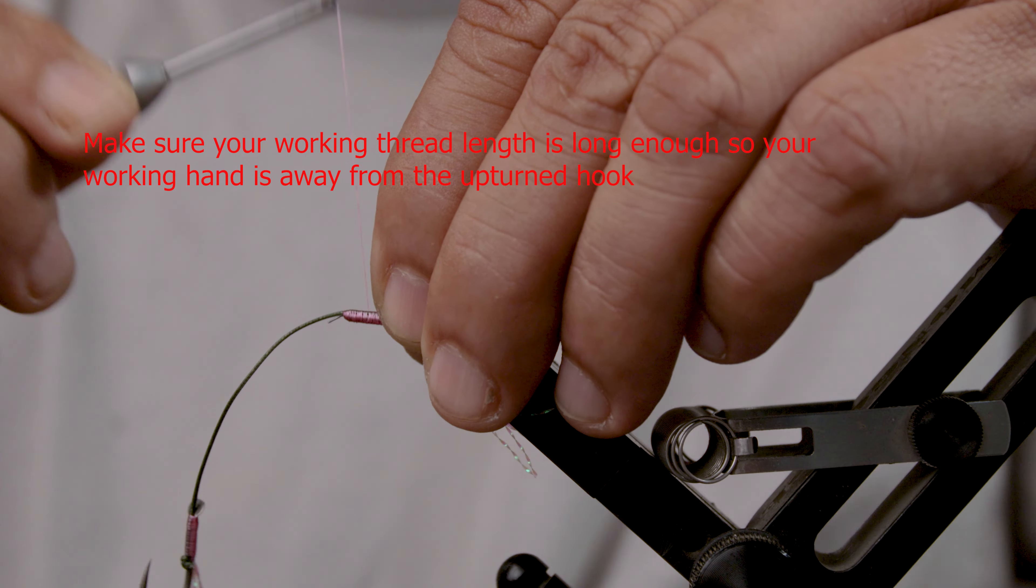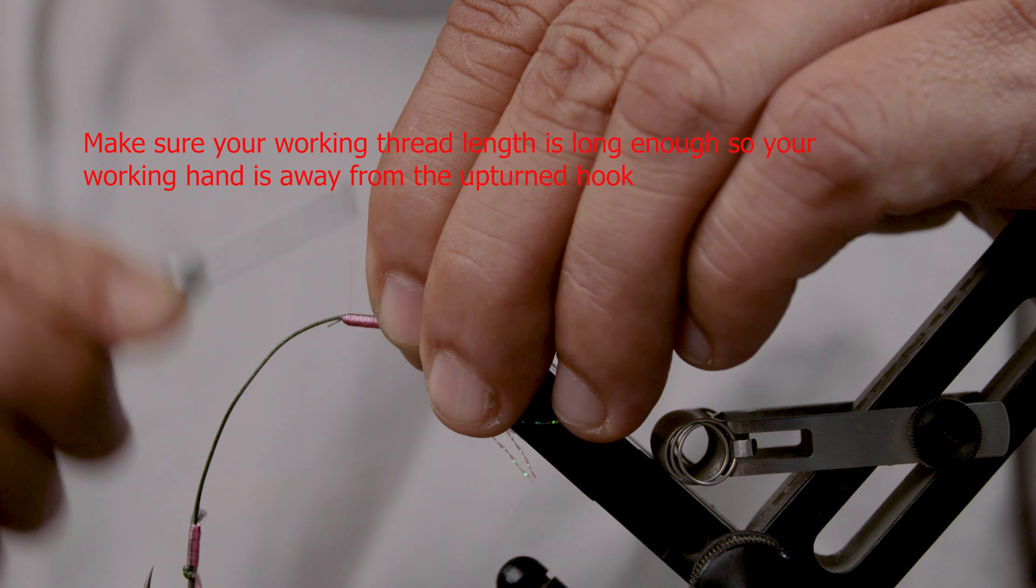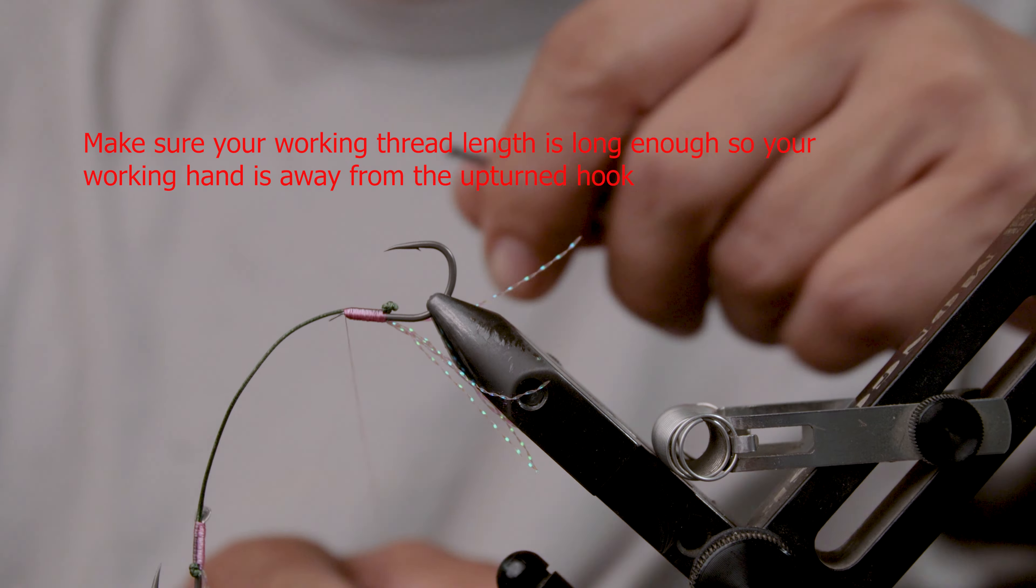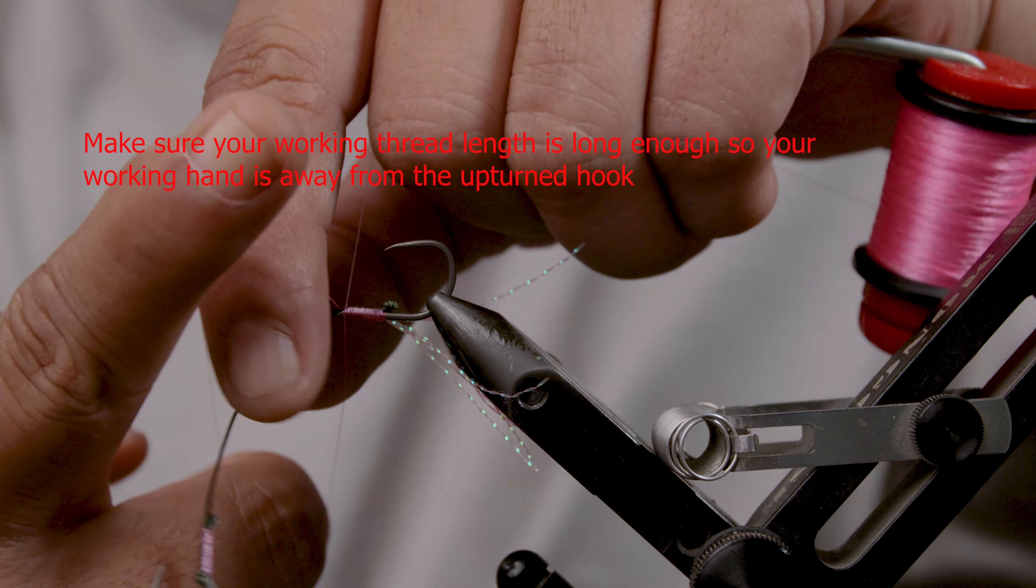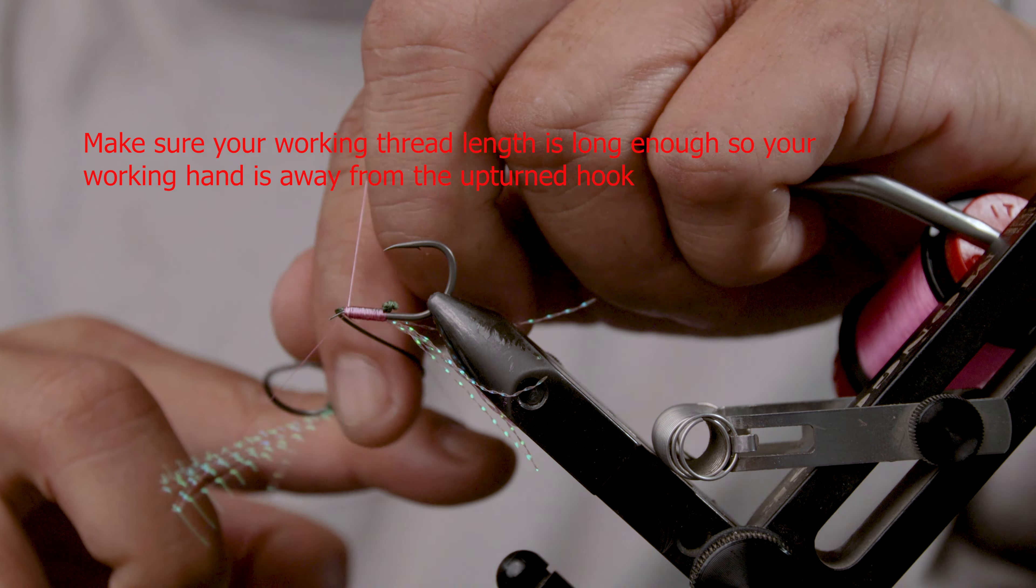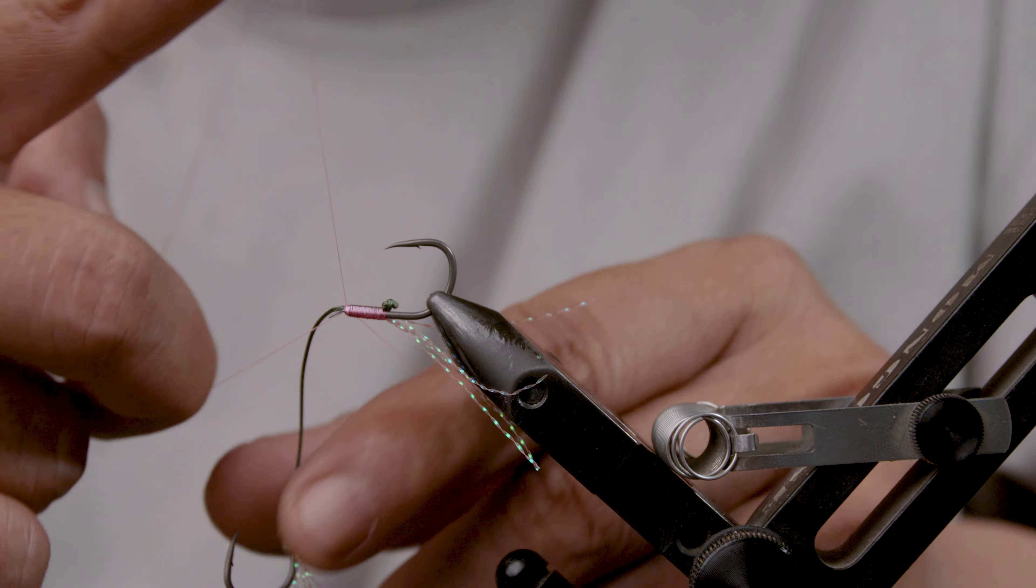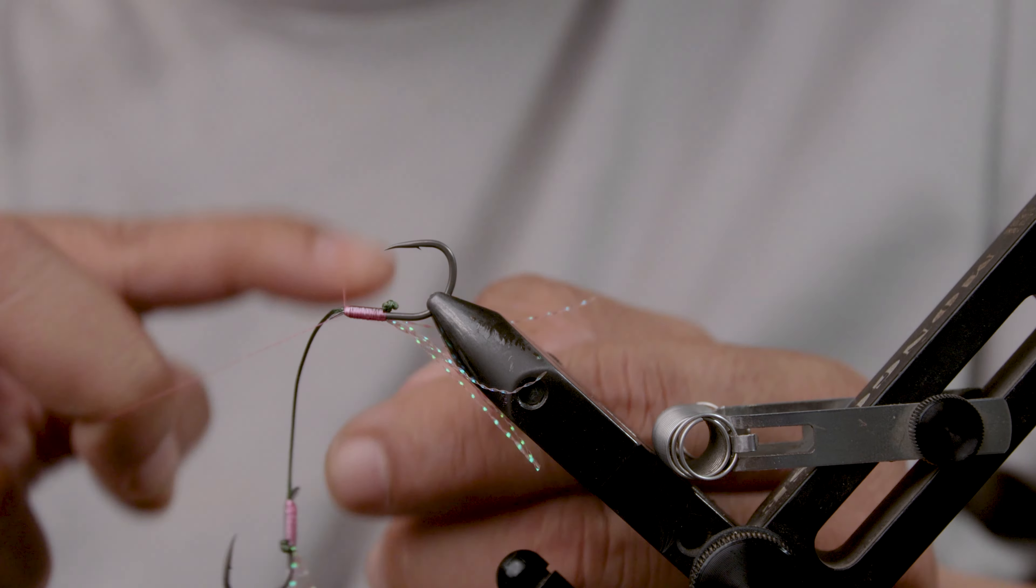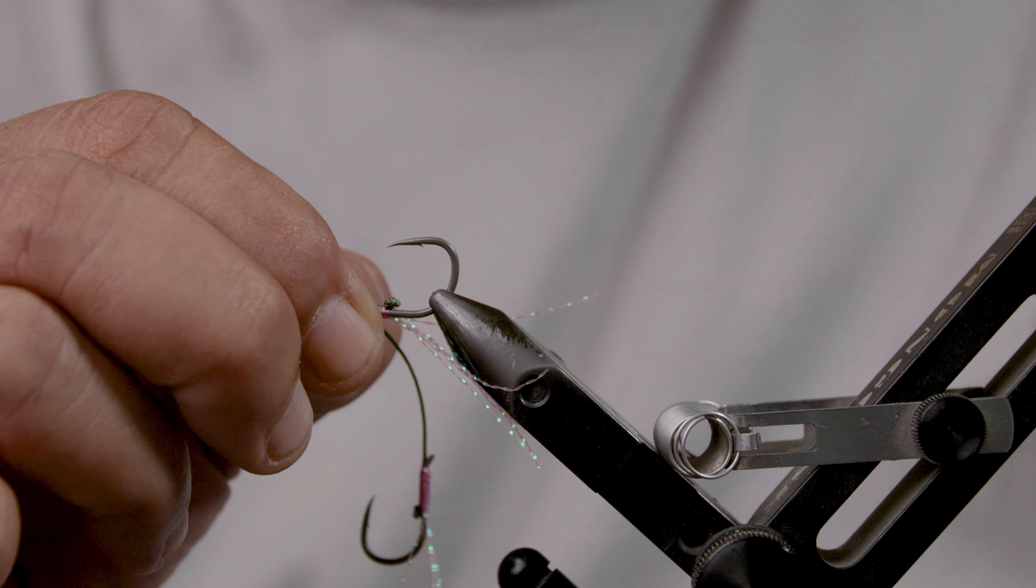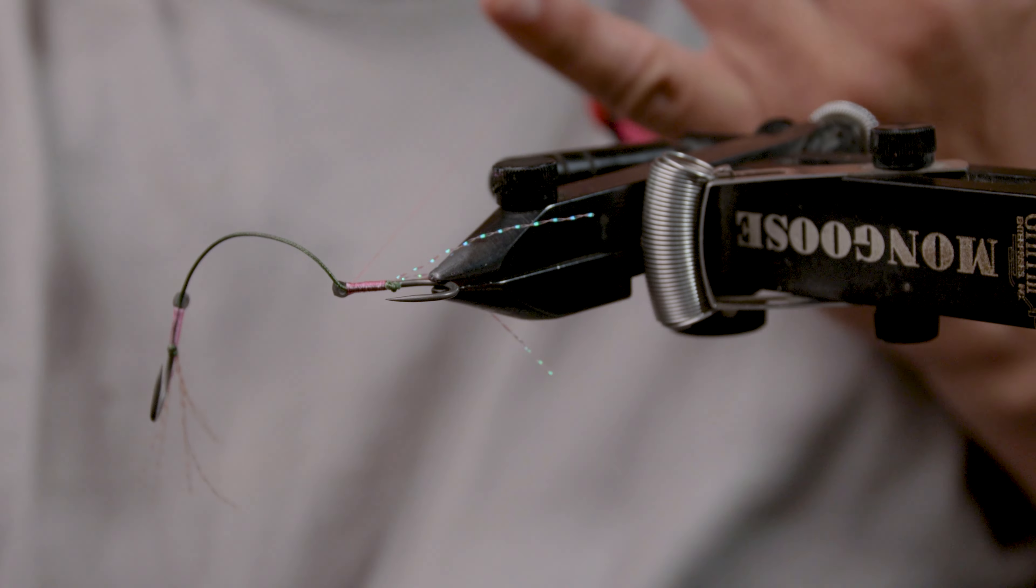So make sure that your length is long enough so that you could just go to the outside of the hook. Takes a bit of practice to do this, but yeah, it's relatively easy. Again, the challenge for this, one of course, is doing your half hitches or doing your whip finish for my case right here. Tighten up, that's pretty much it.